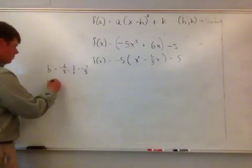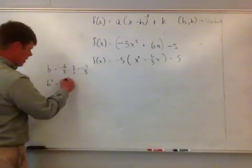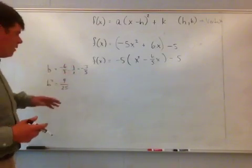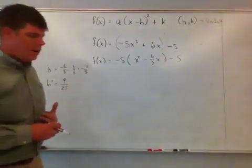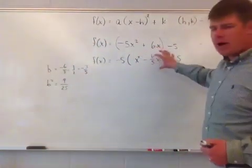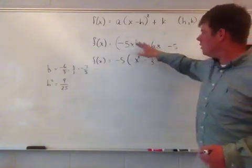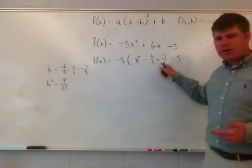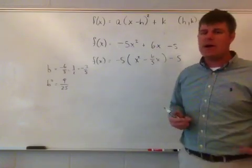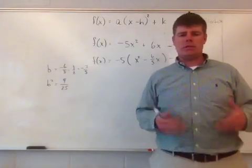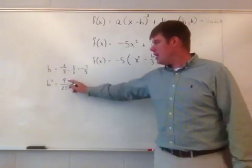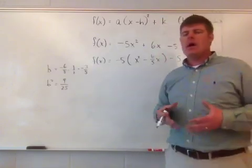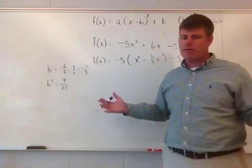Then I compute b squared: negative 3 squared is 9, and 5 squared is 25, so b squared equals 9 over 25. This is the important value to plug into the equation. The key constraint is that I can't change the function's value — it must simplify back to negative 5x squared plus 6x minus 5. So I add 9 over 25 and also subtract 9 over 25, which is adding 0. This changes the look without changing the overall value of the function.